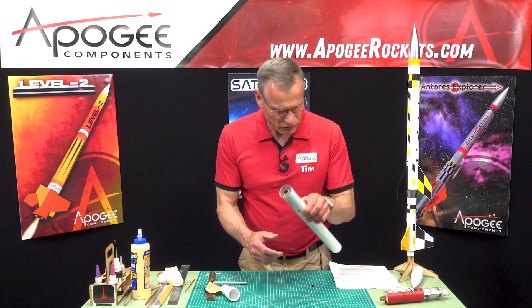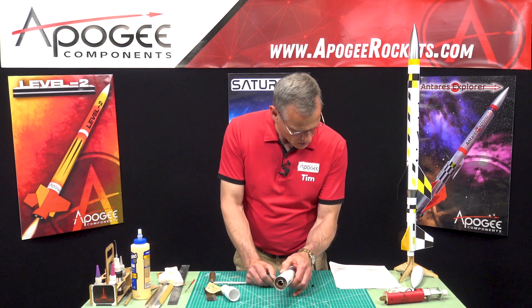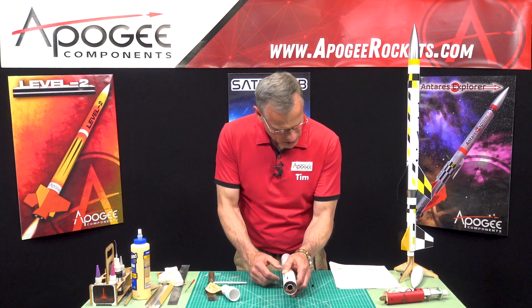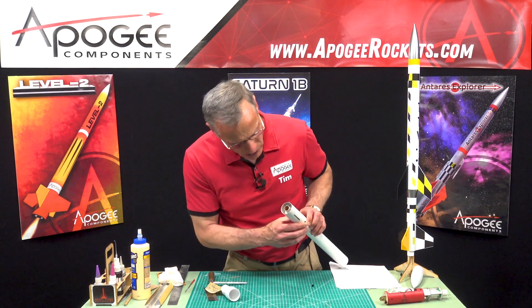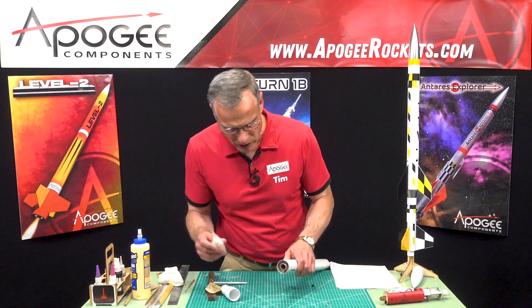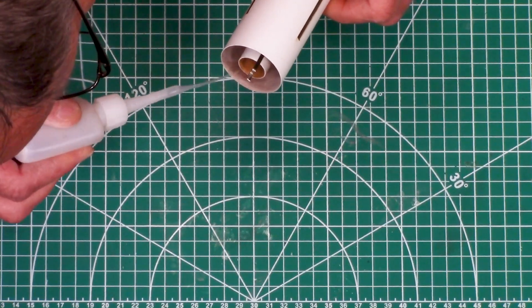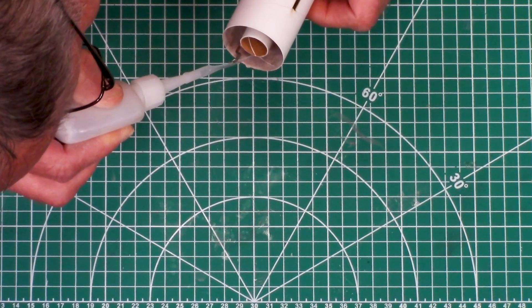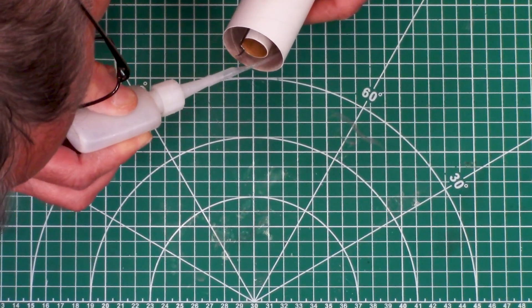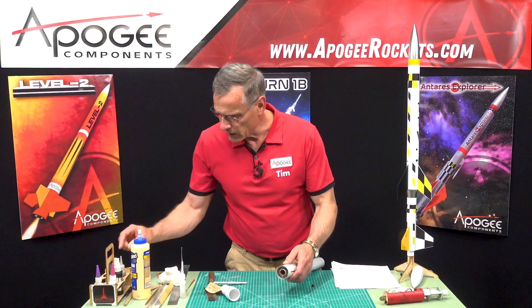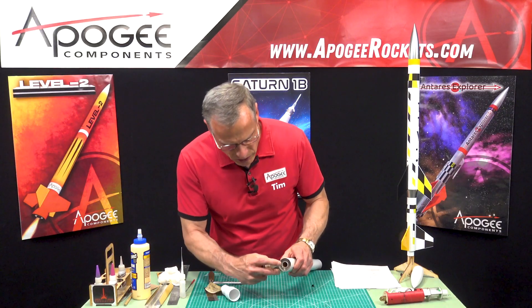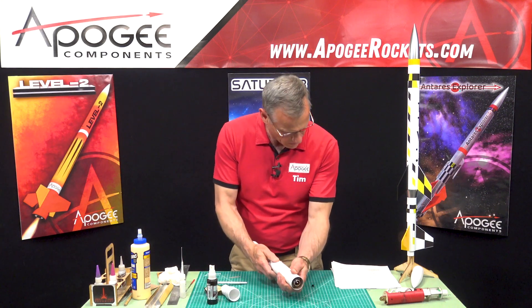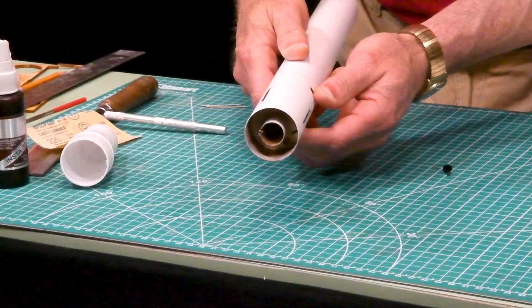From this side we're going to tack it by applying a small amount of thin CA to the aft centering ring. You have the aft centering ring right there. Just go around it. Don't want to use too much—we just want to tack it in place. I'm going to hit it with some accelerator just to lock it in place.